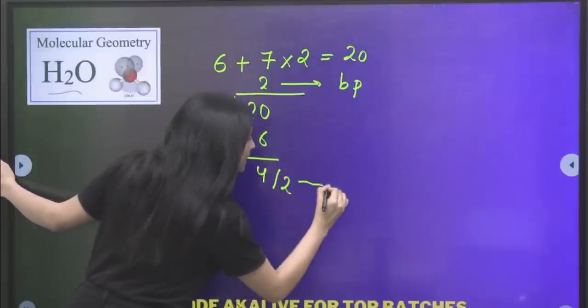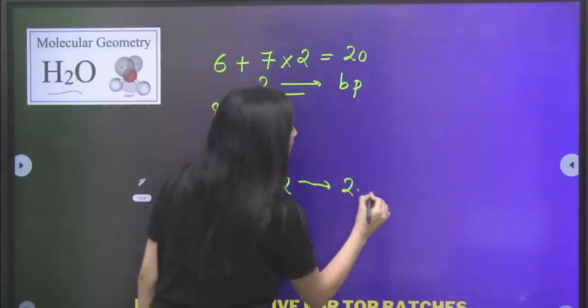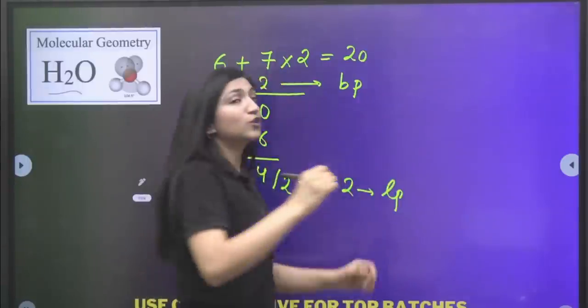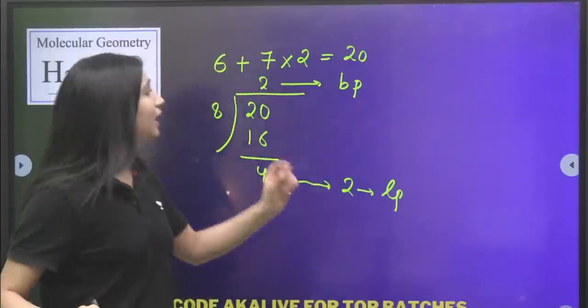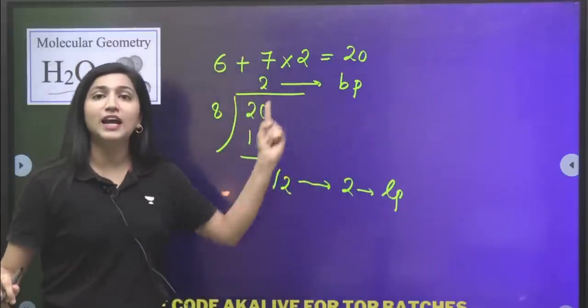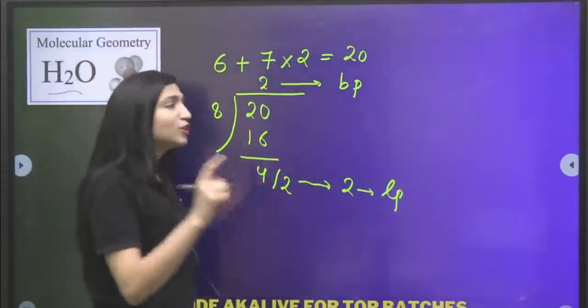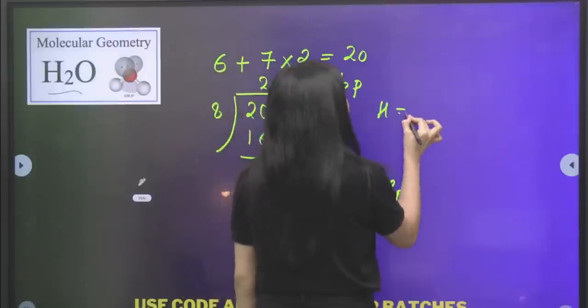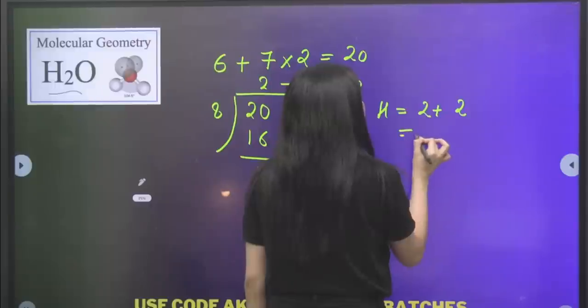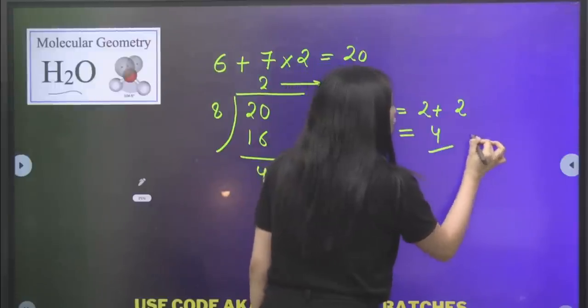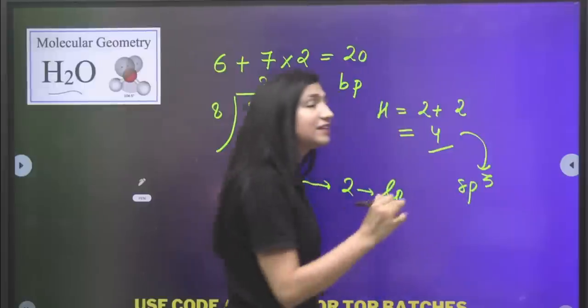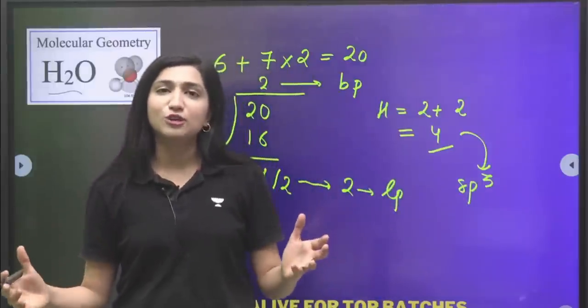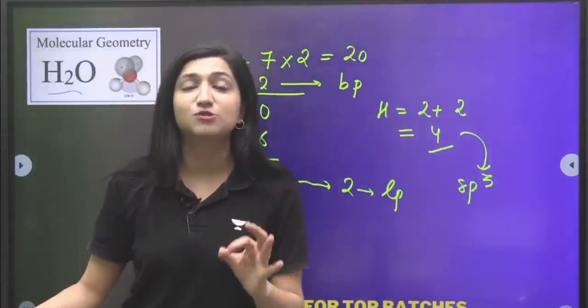We divide the remainder by 2. So number of lone pairs is 2. So here we clearly understand that our water molecule has two bond pairs and two lone pairs. So hybridization will be equal to 2 plus 2, number of bond pairs plus number of lone pairs, which is equal to 4. And when it's 4, your hybridization is SP3. That means water molecule has SP3 hybridization.